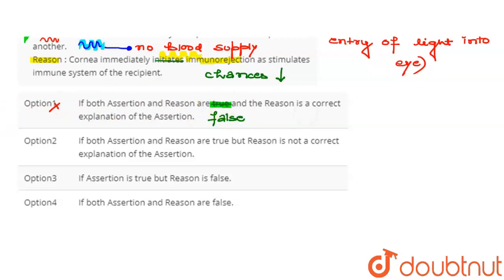The second option is: both assertion and reason are true but reason is not a correct explanation of assertion. This option is wrong because both assertion and reason are false.